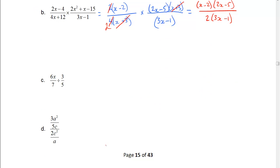Let's do the next two. Here we have a division, so the first thing we're going to do is change it to a multiplication — multiplied by the reciprocal, so that's 5 over 3. Then 3 and 6 cancel and leave 2, and we get our answer of 10x — that's 2 times 5 — over 7. That's how the division works.